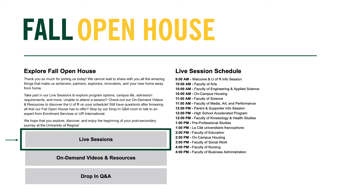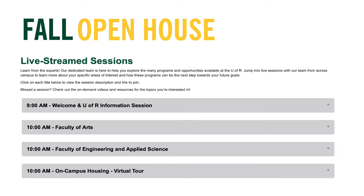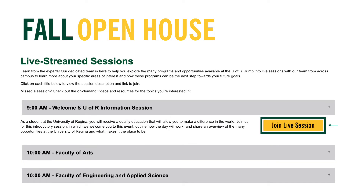When you select the live session option, you will be redirected to that page. Here you will see all the live session names and times listed in the drop-down menu. When you select the session you want to attend, the drop-down will open to show a session description and a Join Live Session button. Selecting that button will instantly take you to the live Zoom webinar session.